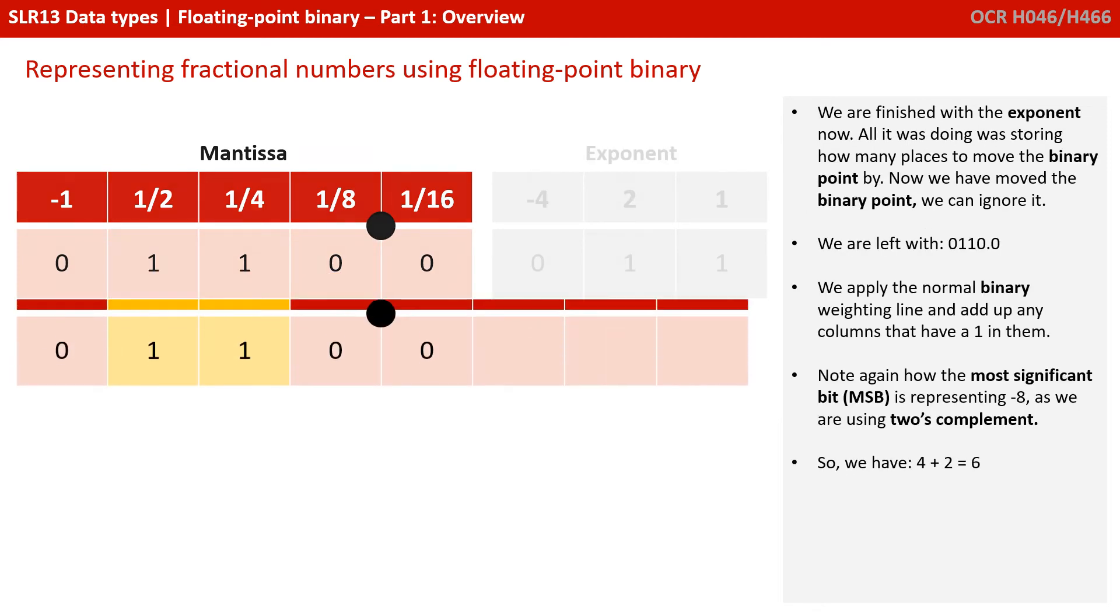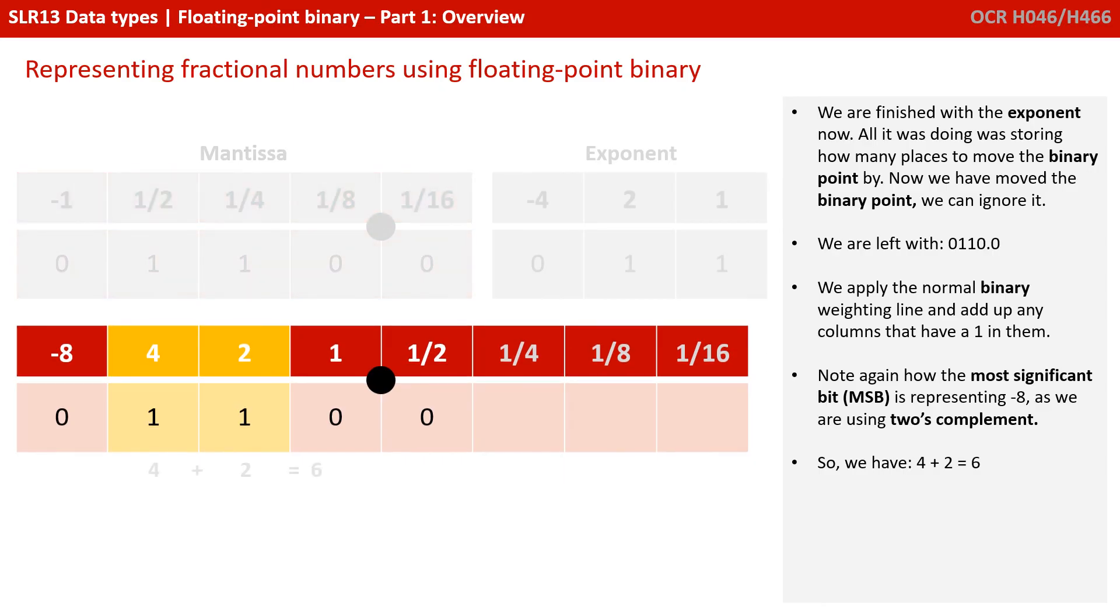So our exponent of 3 is telling us we need to move the binary point in our mantissa three places to the right. We move it to the right because the exponent is positive. Now we've finished with the exponent now. All it was doing was storing how many places to move the binary point. Now we've moved it, we can ignore it.